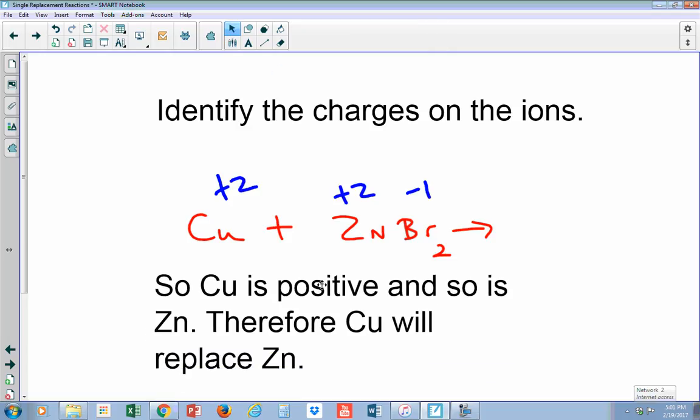So copper, if it were an ion, now right now it has a zero charge, but if it were an ion it probably has plus two. Sometimes copper has plus one, but for this example let's just say plus two. And the reason why I say plus two is zinc has plus two, bromide has negative one, that's why two times negative one balances out for this. So I'm just going to guess that the copper ion is going to be a positive two.